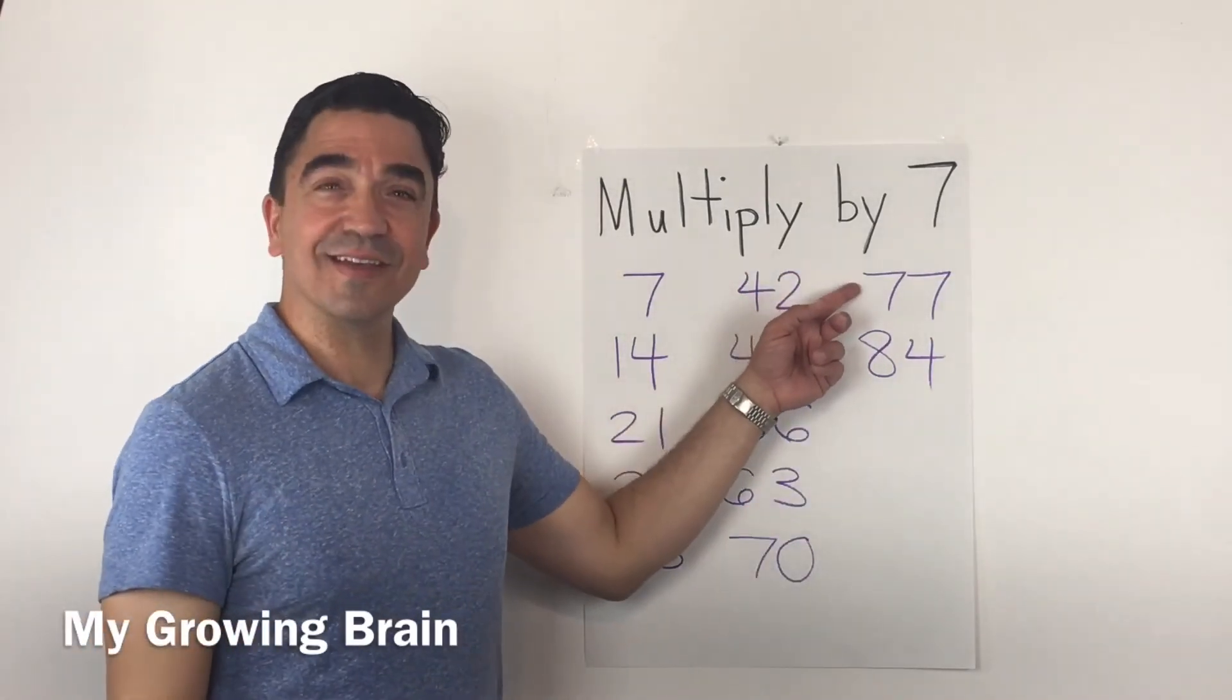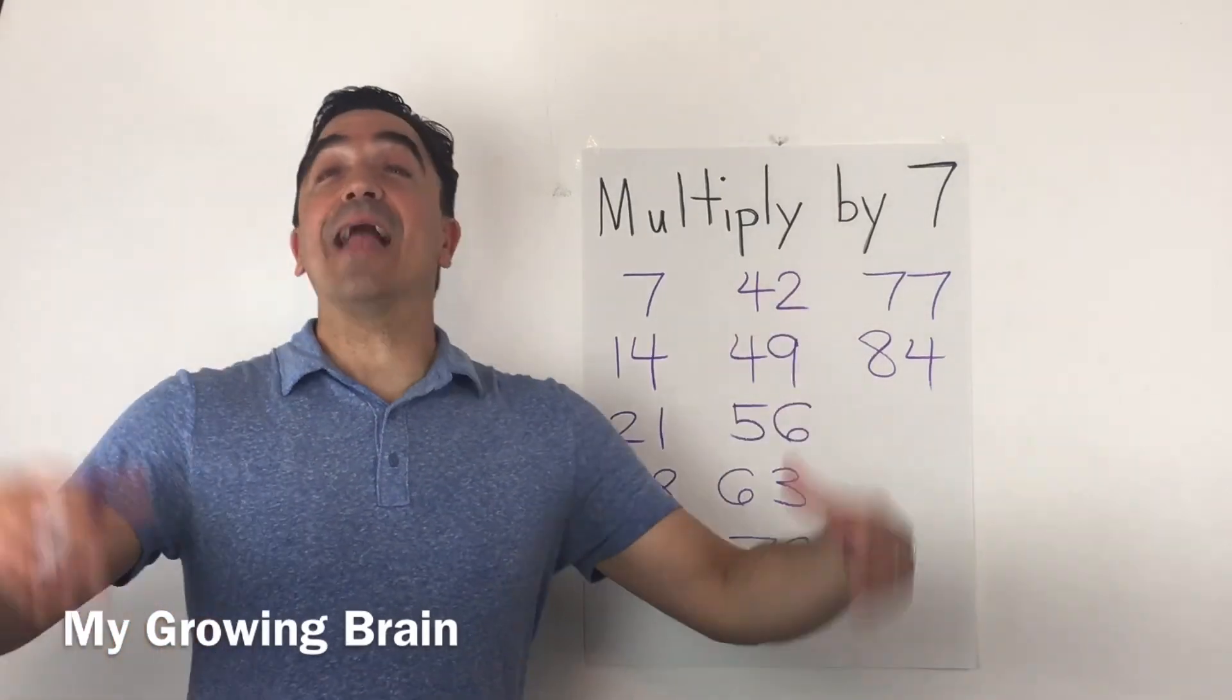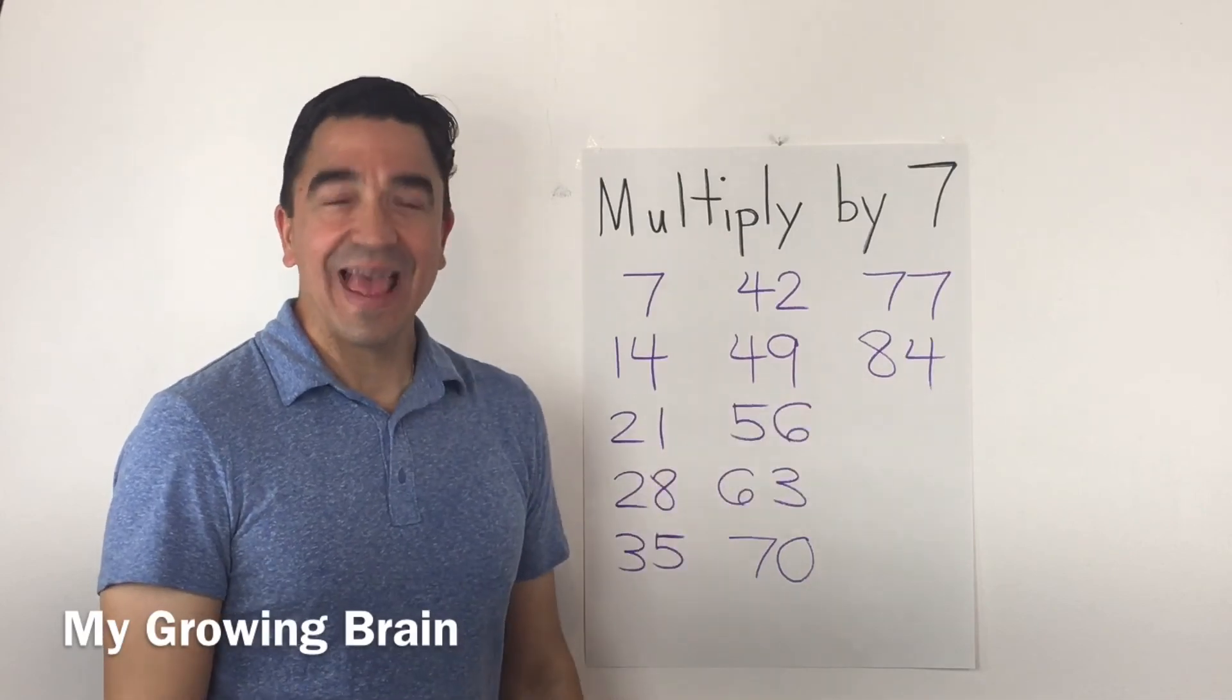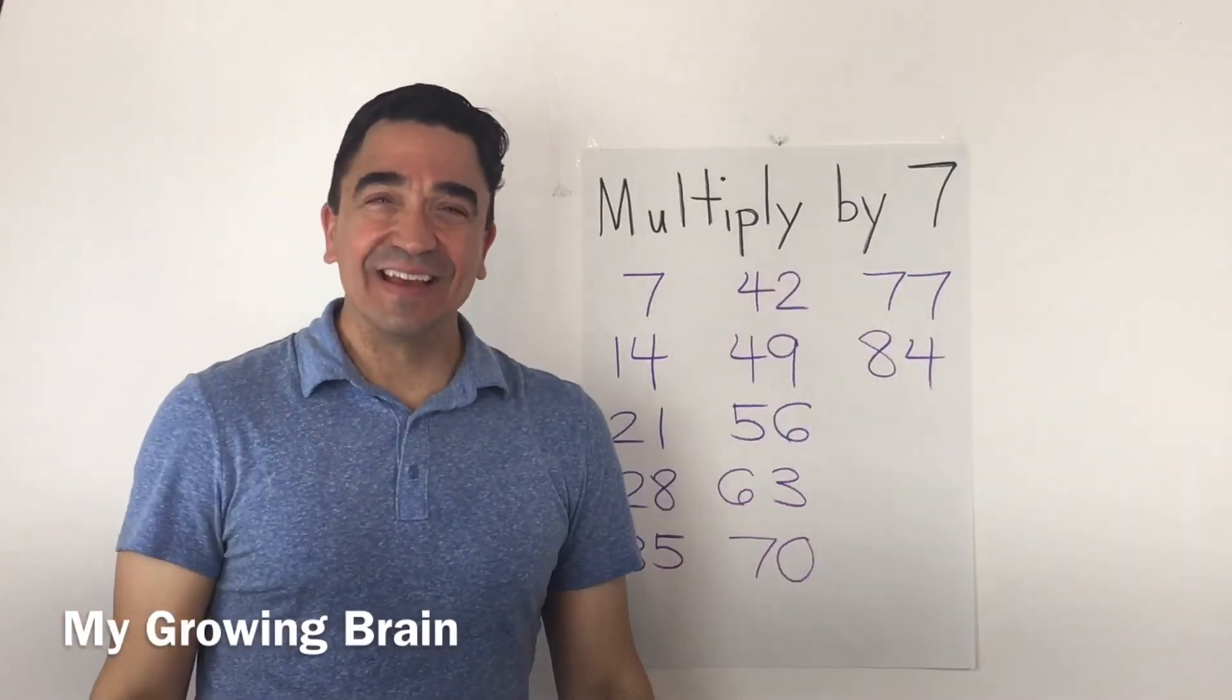Seventy-seven. And seven times twelve, eighty-four. And that concludes our lesson.